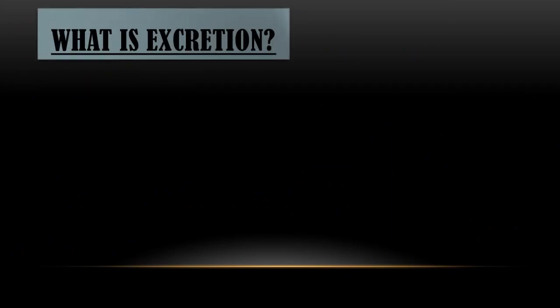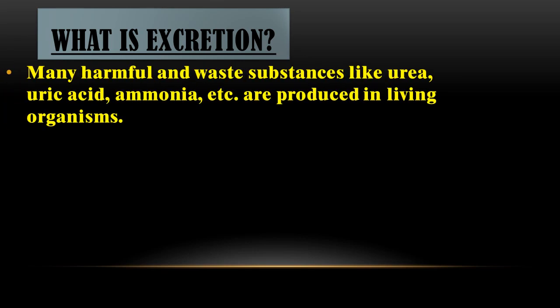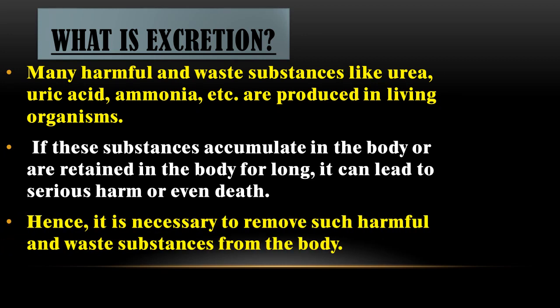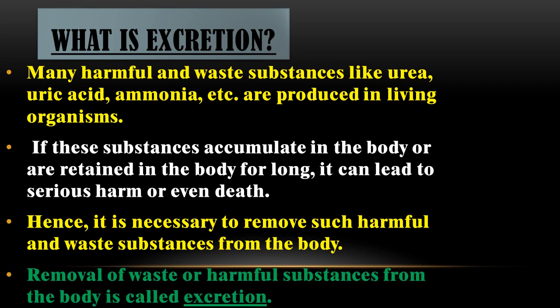What is excretion? In our body, various life processes are happening, like digestion and respiration. Throughout these processes, many chemical substances and chemical reactions take place, and waste materials like urea, uric acid, and ammonia are produced. If these substances accumulate in the body for too long, they can cause serious harm or even death. Therefore, removal of waste or harmful substances from the body of an organism is called excretion.